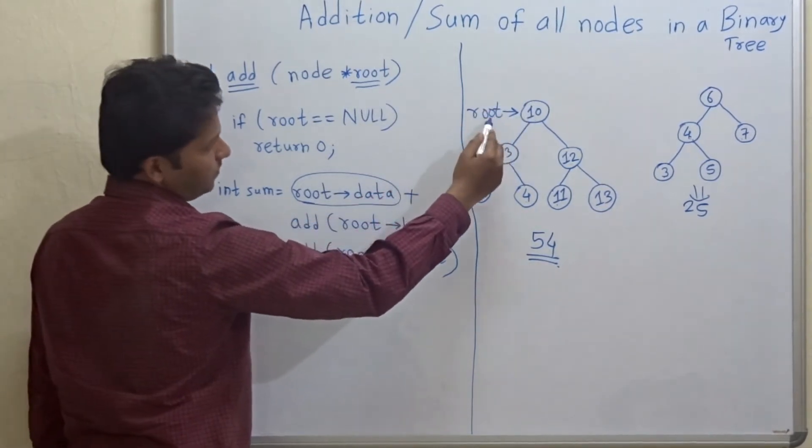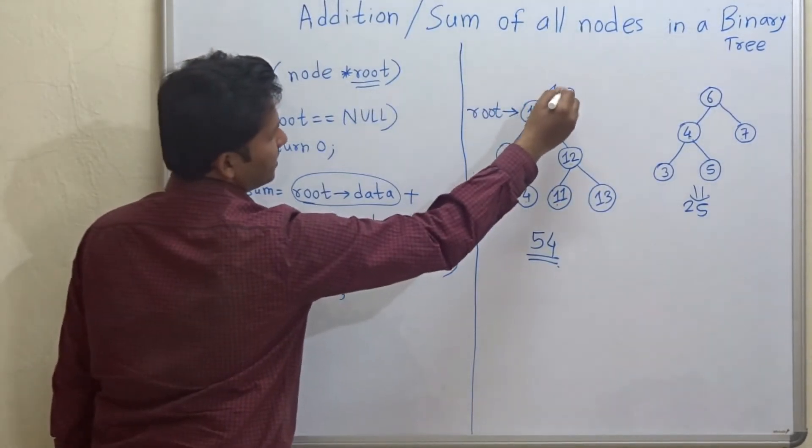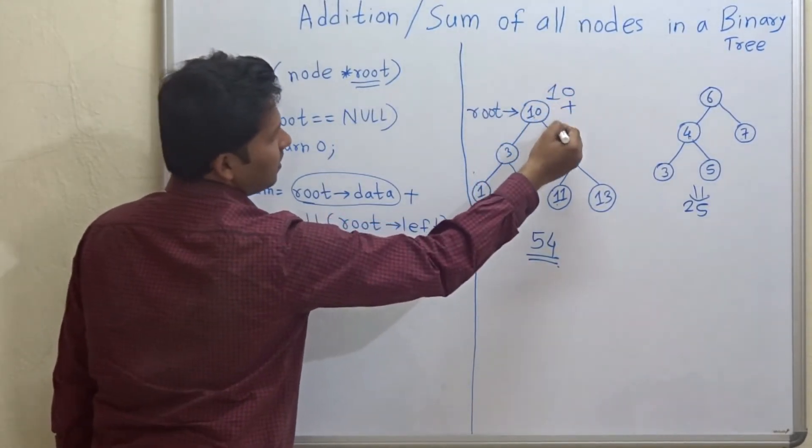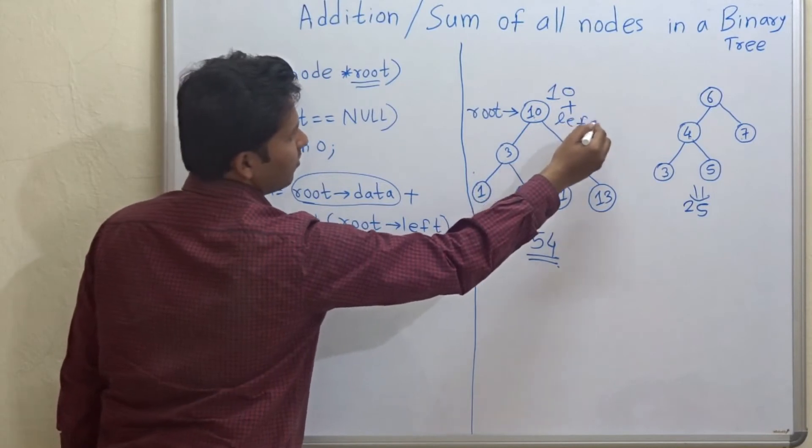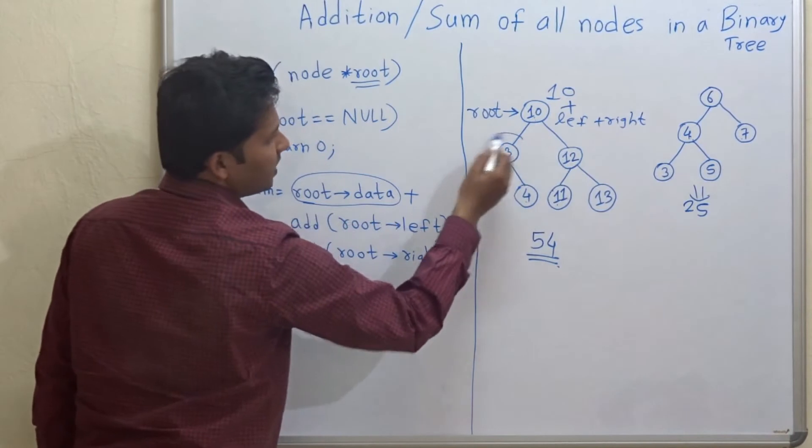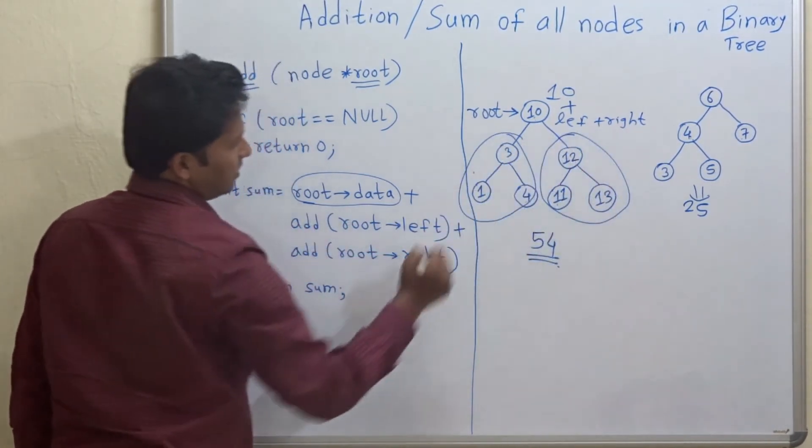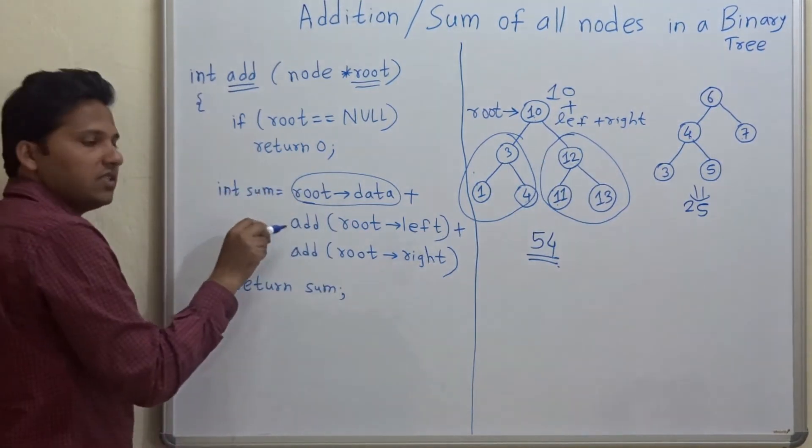So now 10 plus the left sub tree plus the right sub tree. So 10 plus the left sub tree plus the right sub tree, which is what is written in this program.